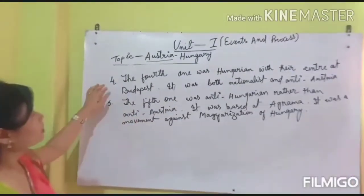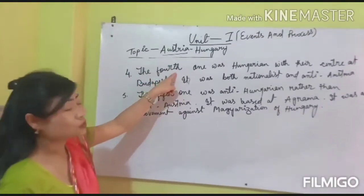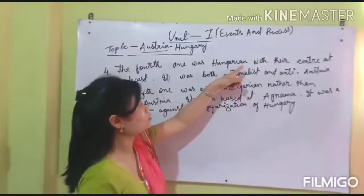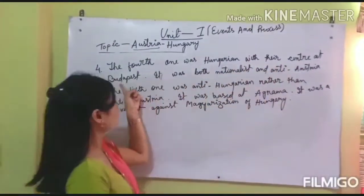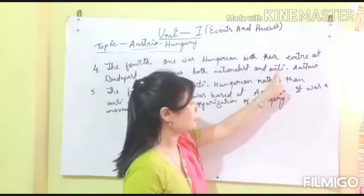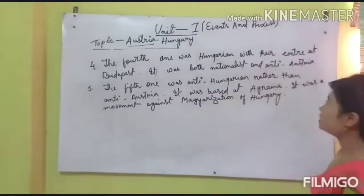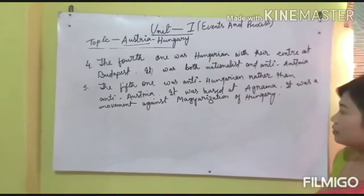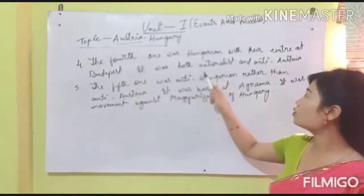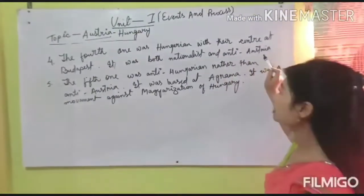The fourth point is the fourth revolution, which was Hungarian, with their center at Budapest. It was both nationalist and anti-Austrian. Hungary's capital city was Budapest, and the fourth revolution was both nationalist and anti-Austrian.